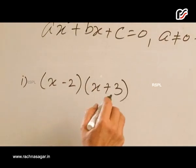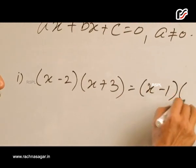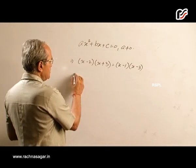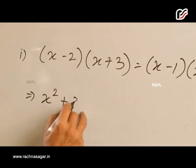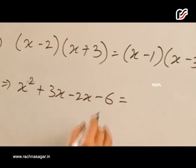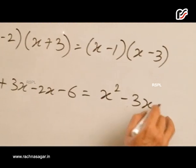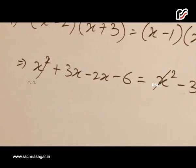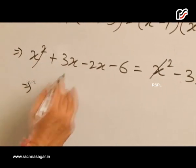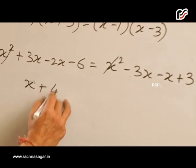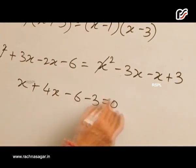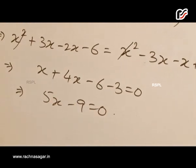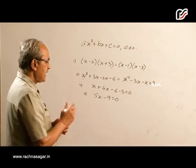Let us try to represent this in the general form. So we open it out: x² + 3x - 2x - 6 = x² - 3x - x + 3. Now here x² cancels and we get x + 4x - 6 - 3 = 0. This implies 5x - 9 = 0.